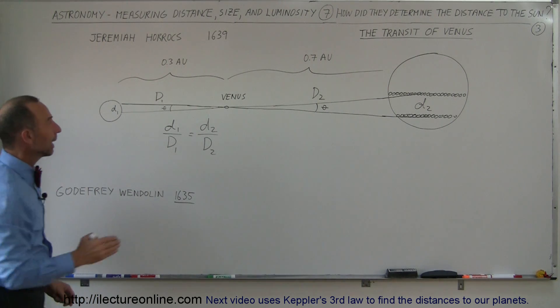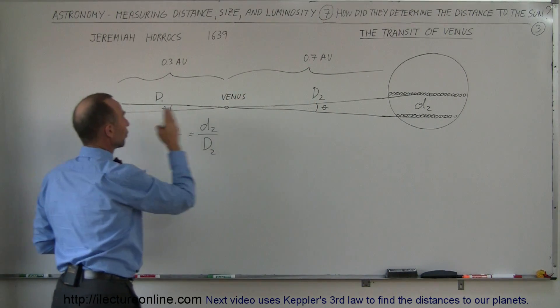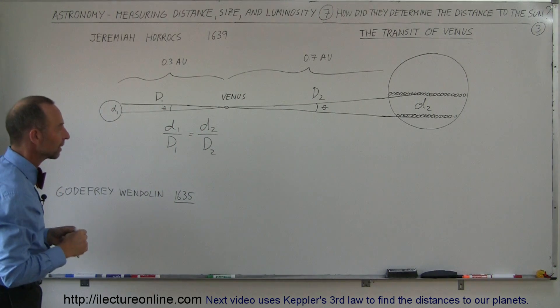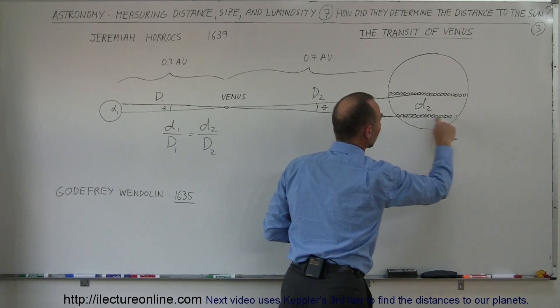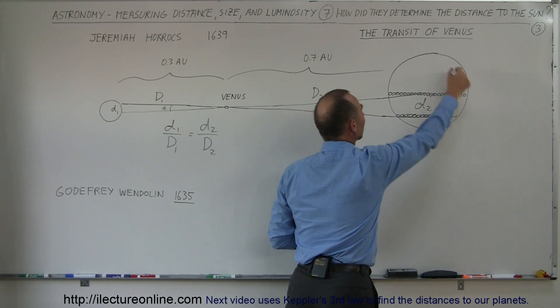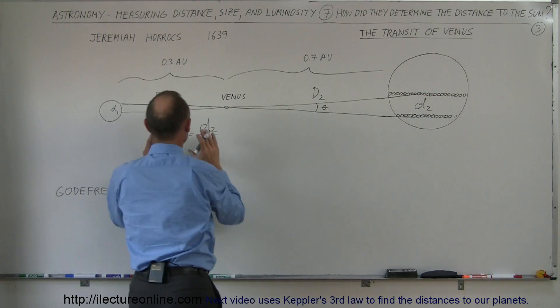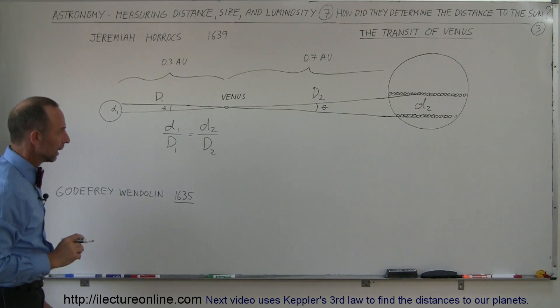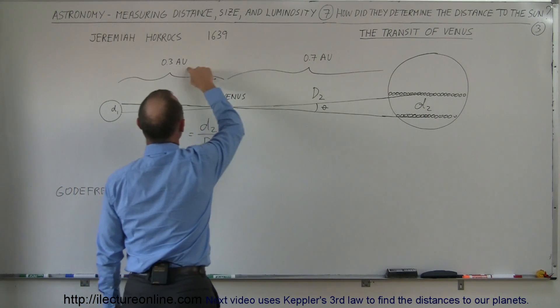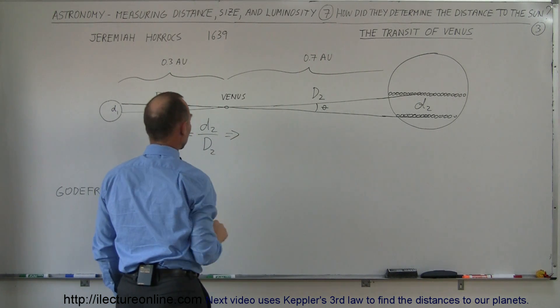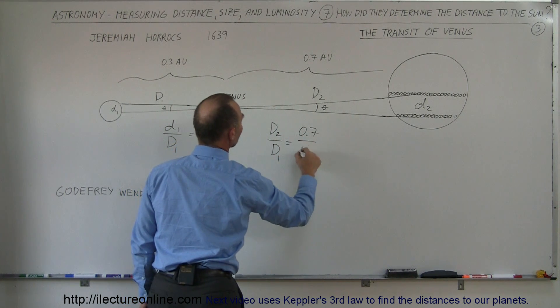Now from Kepler's laws, we knew that the distance between Venus to the Sun was about 70 percent the distance from the Earth to the Sun. That was Kepler's third law. And so all they had to do was measure this angle by measuring the time it took Venus to traverse across the Sun, by doing some geometry, and by knowing the size of the circle, and they could figure out the distance D2. They could then figure out what this angle is equal to, and then they can set up this ratio. And they knew that the relative distance, that D2 to D1 was 0.7 divided by 0.3. So we can say that the ratio, D2 divided by D1, was equal to about 0.7 divided by 0.3.